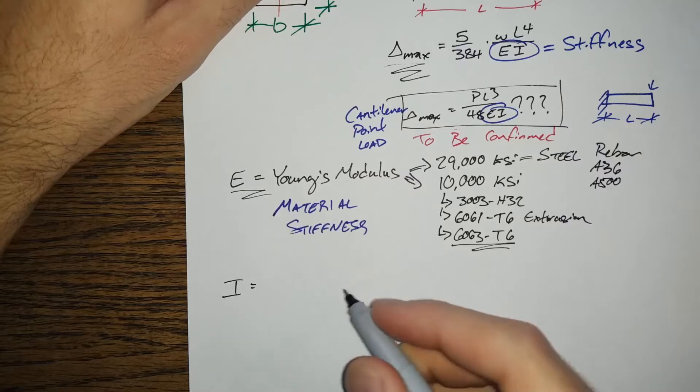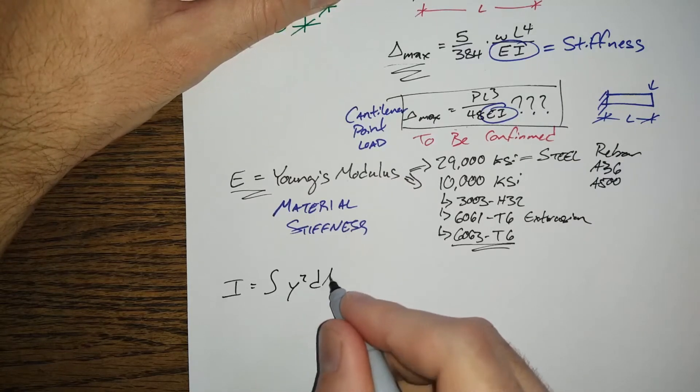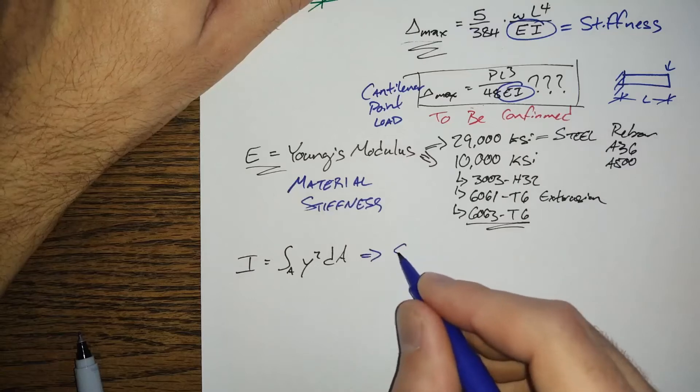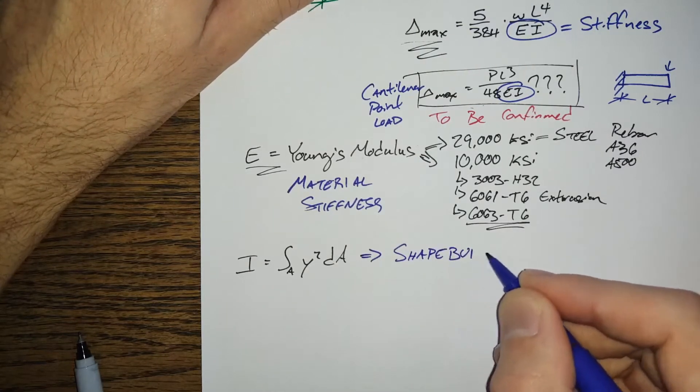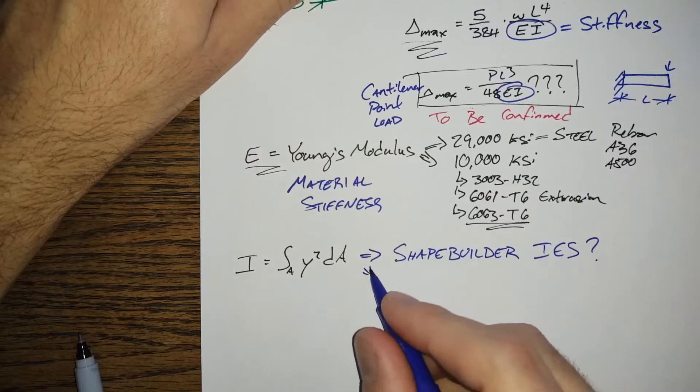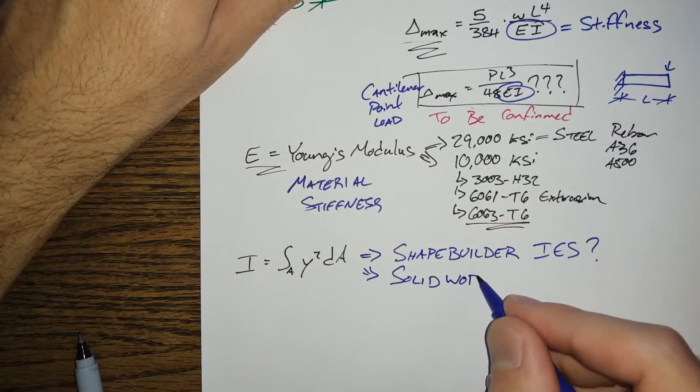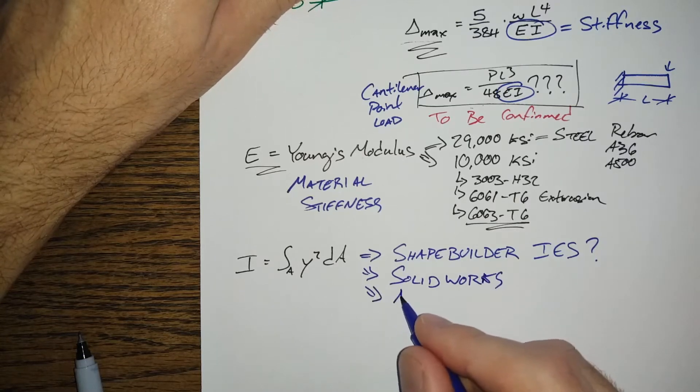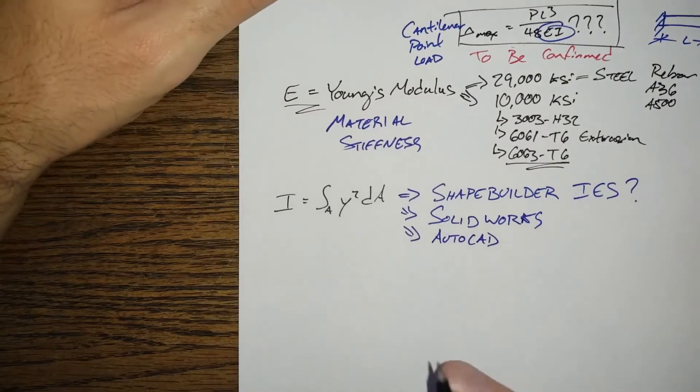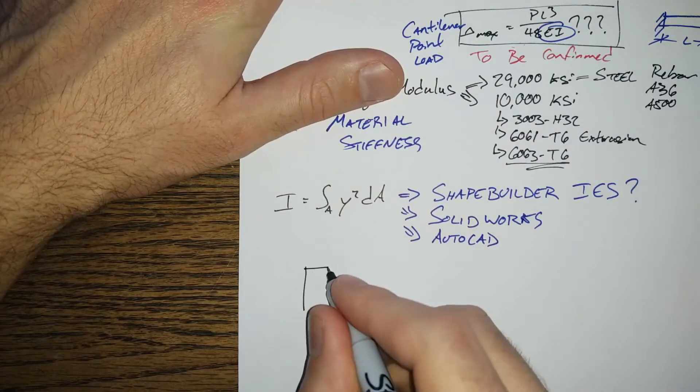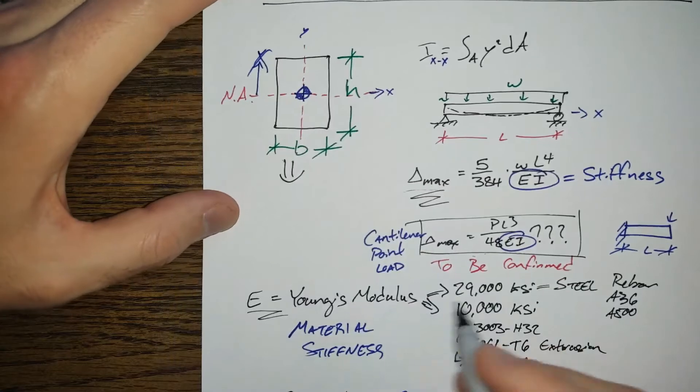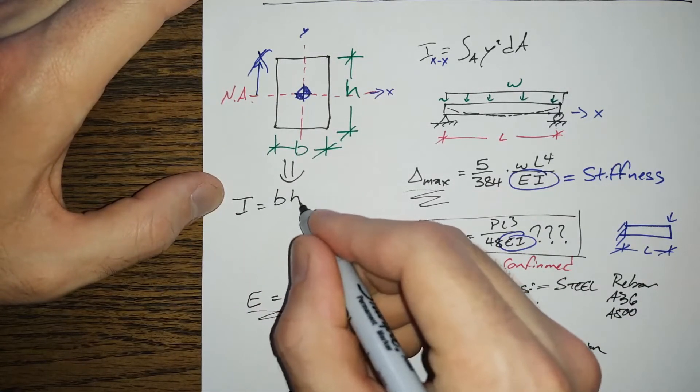And I, that second moment of area, pretty much no one does this integration by hand anymore. There are programs that can do this for you. I recommend Shape Builder, it's what we use in the office, things from IES. SolidWorks can generate those, AutoCAD can also do it. It won't give you quite as many section properties. But when you've got a simple shape, when you've got a box, say you've got our example beam up here for this particular situation, I is just equal to bh cubed over 12.